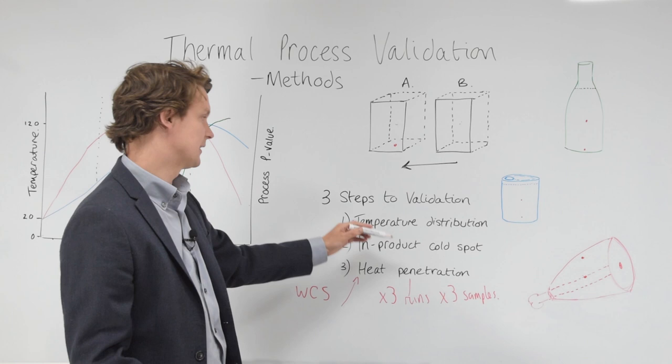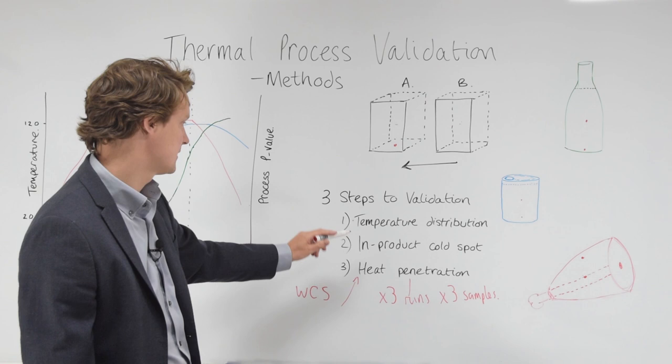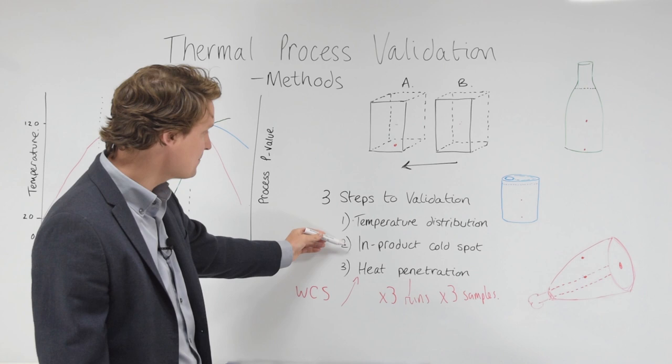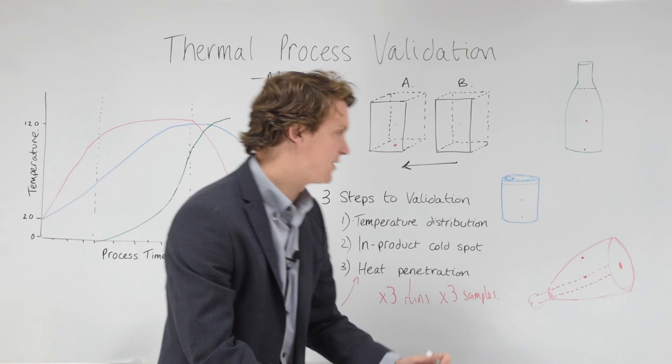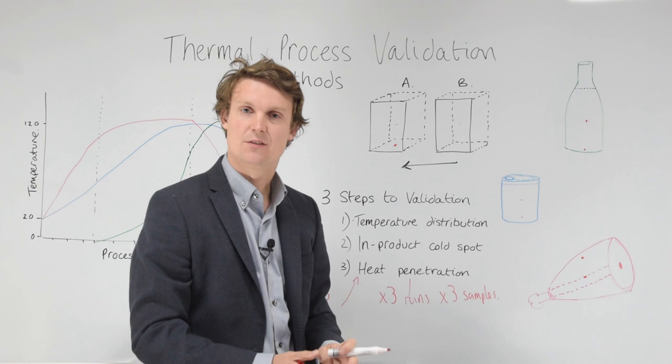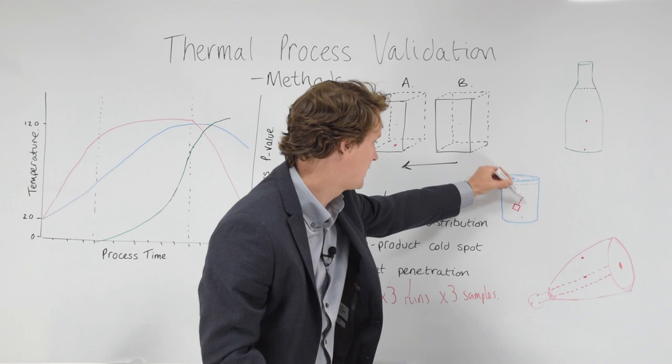We might need to do some more testing. We'd call that testing in-product cold spot analysis. We need to do our test for temperature distribution in-product cold spot. From the data we get from that, that informs us what our worst case position is for our samples in the cooking vessel and it informs us of our worst case position in the actual product itself. So maybe it's here, or maybe we find that it's by the bone here.